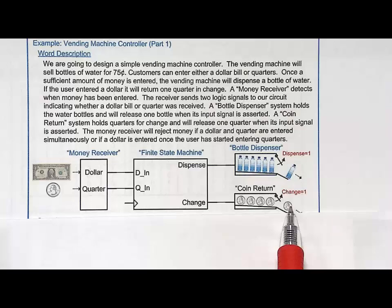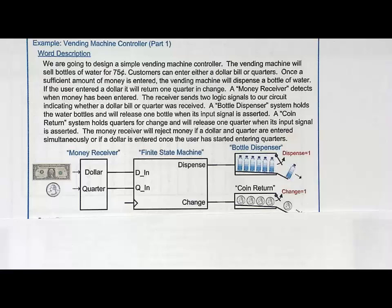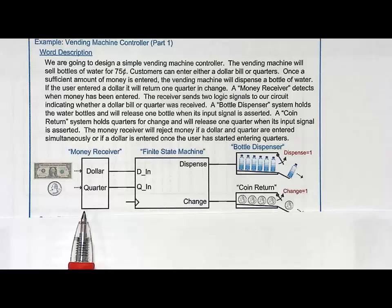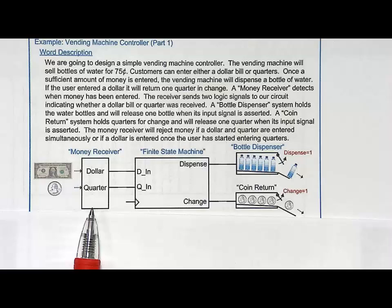We're going to sell bottles of water for 75 cents. We'll have a mechanical system on the front end which can take either a dollar or a quarter. If it only took dollars, you wouldn't need a finite state machine — you would just take the dollar in, dispense a bottle of water, give a quarter change, and you'd be done. That would be a combinational logic circuit, actually two combinational logic circuits to produce dispense and change.